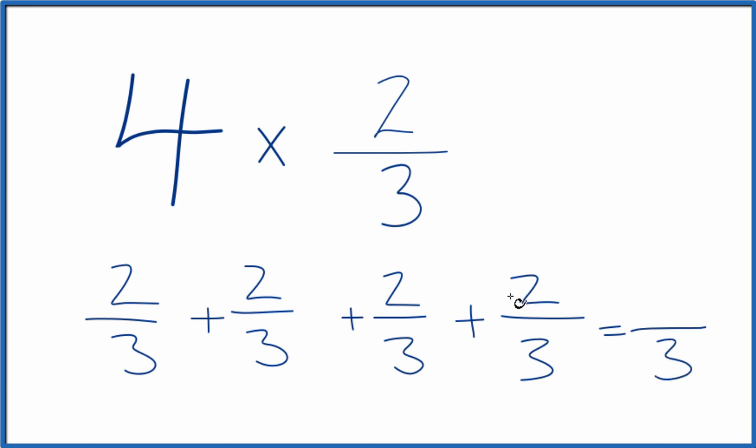2 plus 2 plus 2 plus 2, that's 8. So 4 times 2 thirds, that would equal 8 thirds.